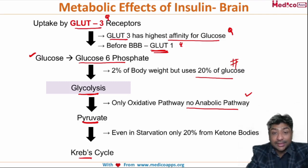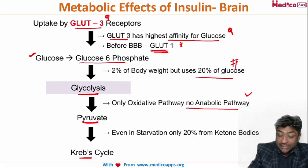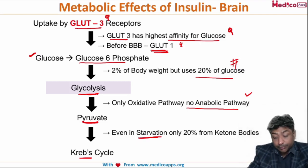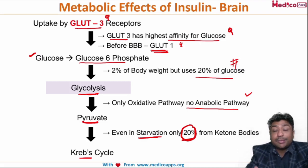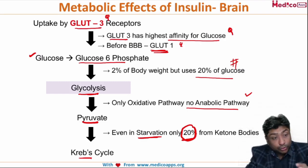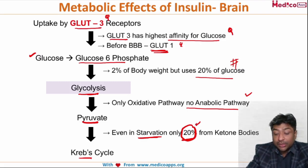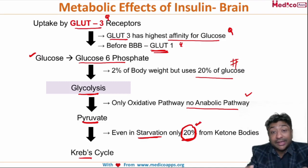Another very important fact: brain primarily depends on glucose for its metabolism. However, even in starvation, the brain can switch to ketone bodies — but only 20% of the brain's total energy requirement can be met by ketones. So a common exam question asks: what is the major energy source for the brain in starvation? The answer is still glucose, because even in starvation, 80% of brain energy comes from glucose.